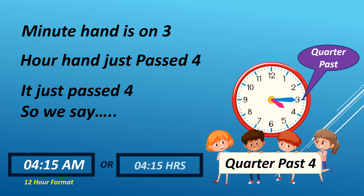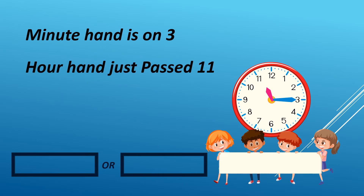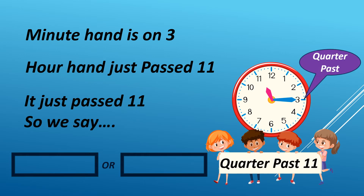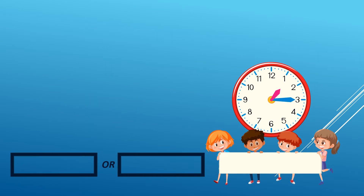We read it as 415 hours in 24-hour format. When the minute hand is on 3 and the hour hand just passed 11, we say quarter past 11. It can either be AM or PM. For example, it is 11:15 PM in 12-hour format. We read it as 2315 hours in 24-hour format.